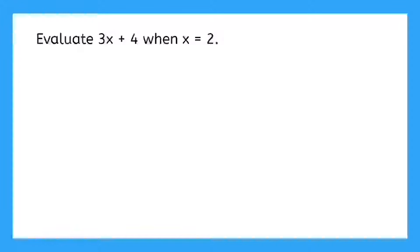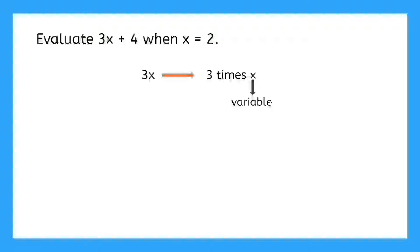Let's start with an example. We have the expression 3x plus 4, and we need to evaluate it when x is equal to 2. Now, what does 3x mean? That's right — it means 3 times x. It is a product. And what do we call x? A variable. That makes 3 a constant times a variable, and we call that a coefficient.